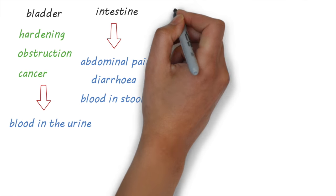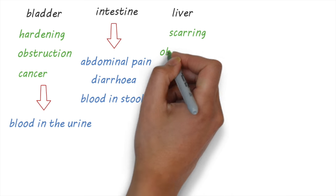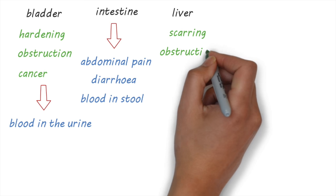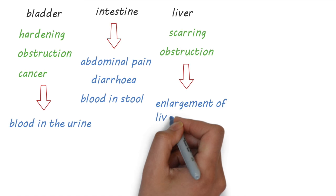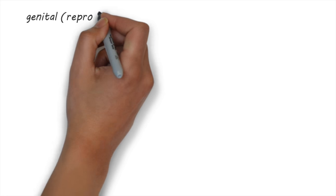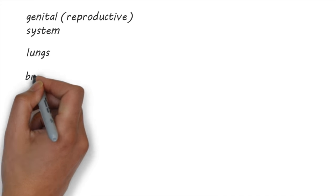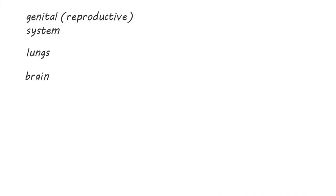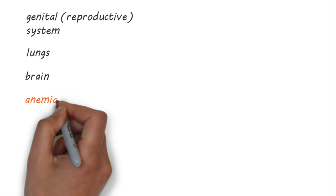In the liver, the eggs can cause scarring of the tissues around the vessels of the liver, obstructing them, and can cause enlargement of the liver and spleen. Other organs that can be affected include the genital system, lungs, and sometimes even the brain. Chronic infection, especially in children, can lead to anemia.